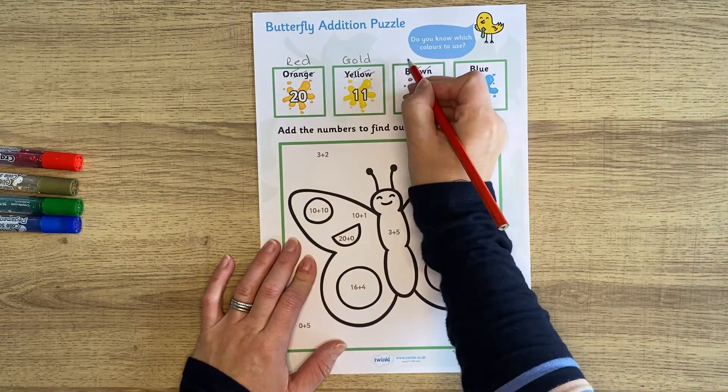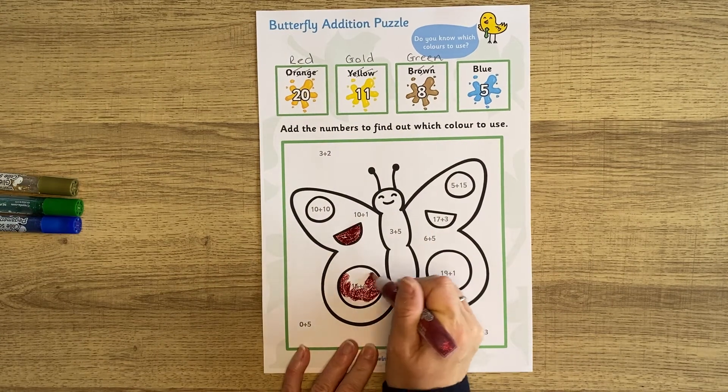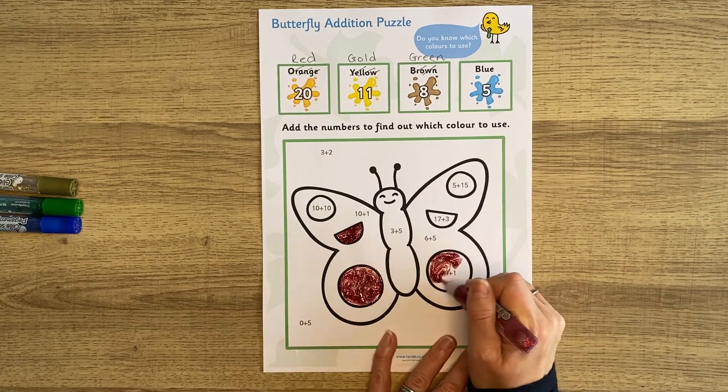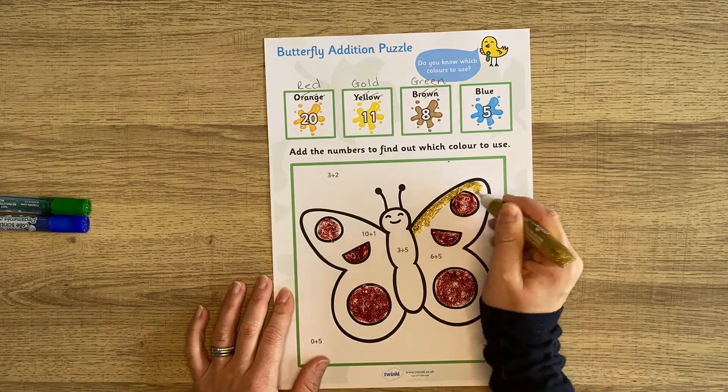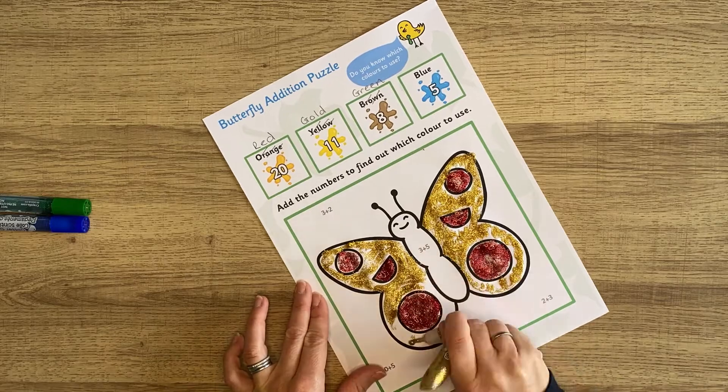This butterfly addition puzzle is super simple. All you have to do is work out the sums and colour according to the answer. If you don't have the right colours, why not just change the colours? Here I used glitter pens for a lovely effect.